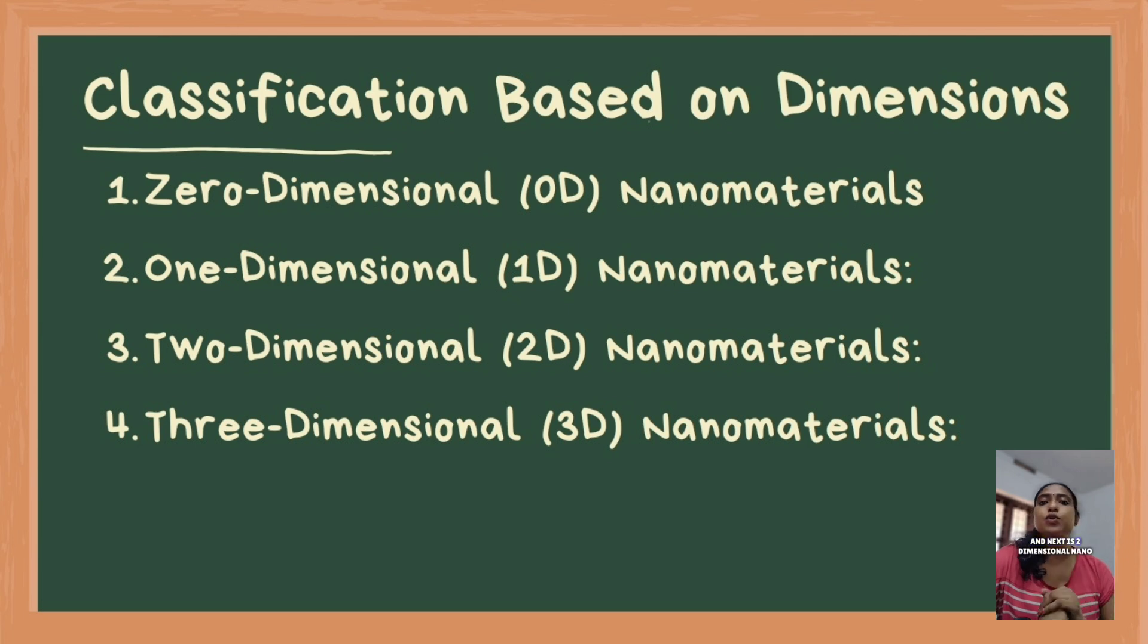Next is two-dimensional nanomaterials including graphene and nanosheets which have two nanoscale dimensions. And finally, three-dimensional nanomaterials such as aerogels and nanostructured forms have internal nanoscale features.